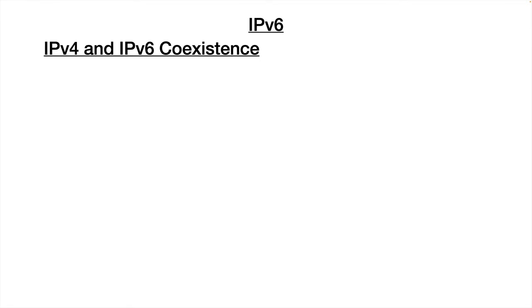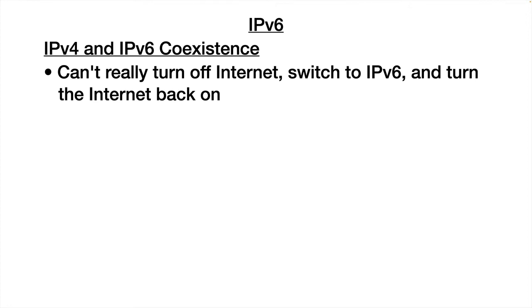As far as switching to IP version 6, we need to talk about IP version 4 and IP version 6 coexistence. We can't simply turn the internet off on the entire planet, move everything to IP version 6, and turn it back on. That's not realistic for lots of reasons. So we have come up with ways that IP version 4 and IP version 6 can coexist on the same networks.